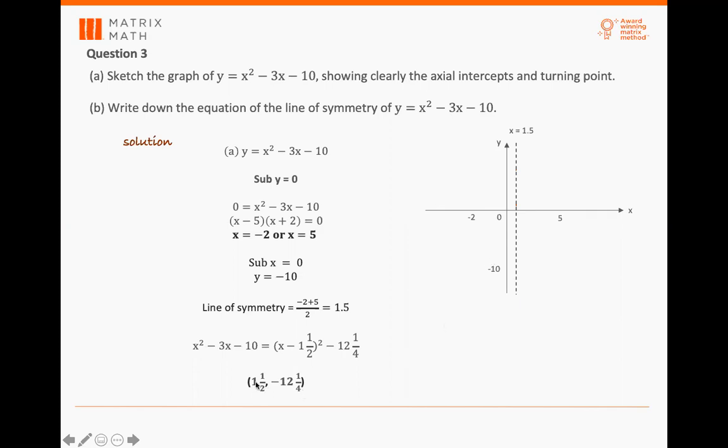So 1.5 and negative 12 and 1 over 4, this tells you that this is the minimum point. Since it's actually curving upwards, you will have a minimum point. So minimum point is here.